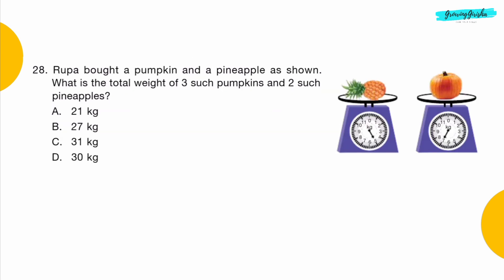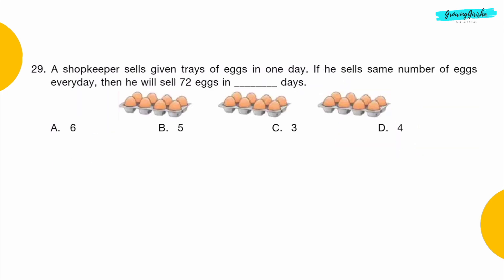Question 28: Rupa bought a pumpkin and a pineapple as shown. What is the total weight of 3 such pumpkins and 2 such pineapples? Option C: 31 kg.